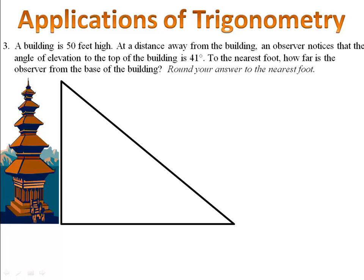Well, we're going to use trigonometry. And so we'll draw a triangle right alongside the building. Now, let's fill in the information that we have. The building is 50 feet high. The angle of elevation is 41 degrees. And the observer wants to know how far we are from the base of the building.